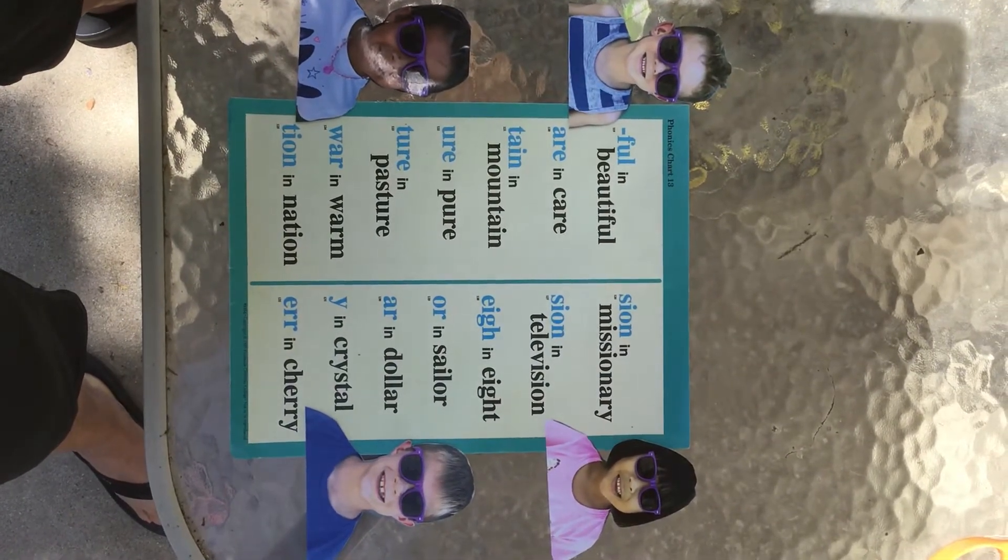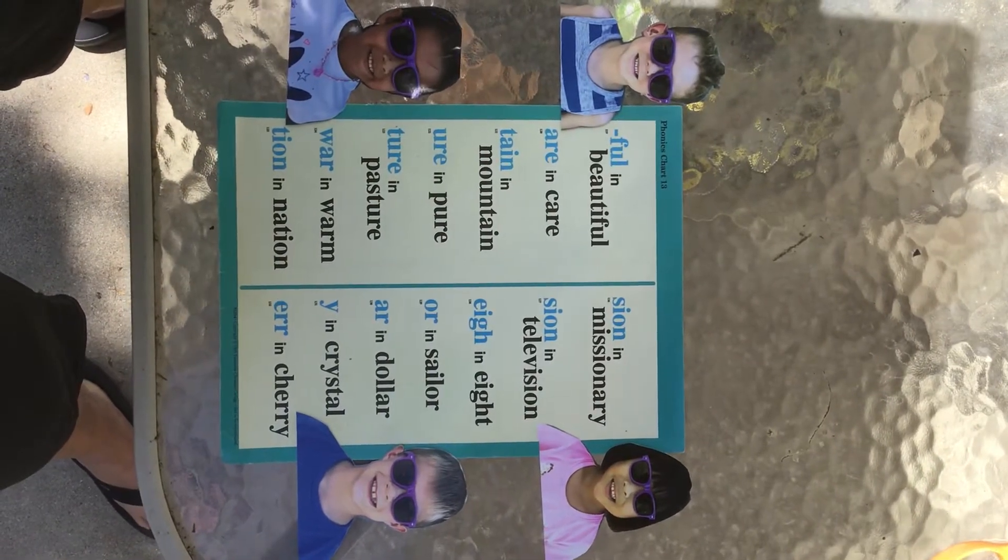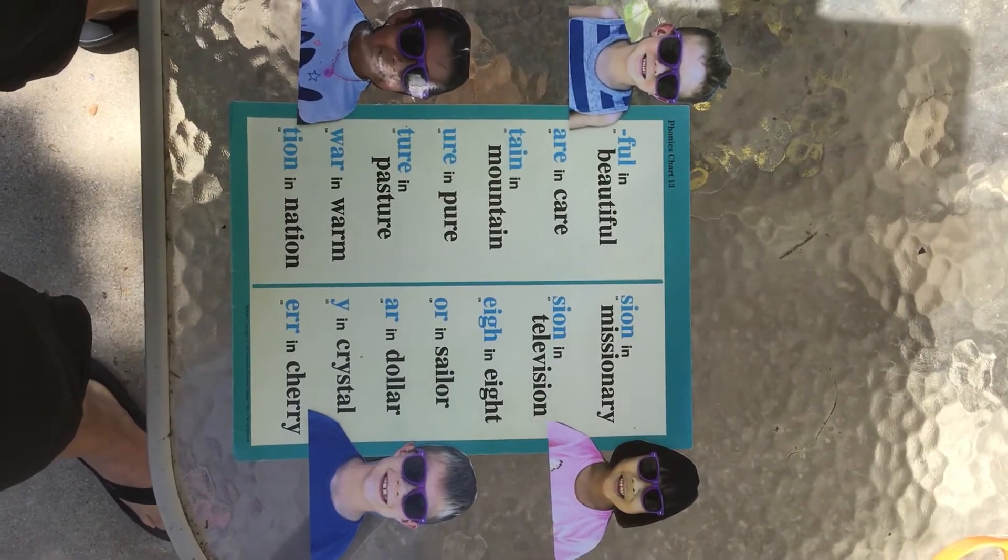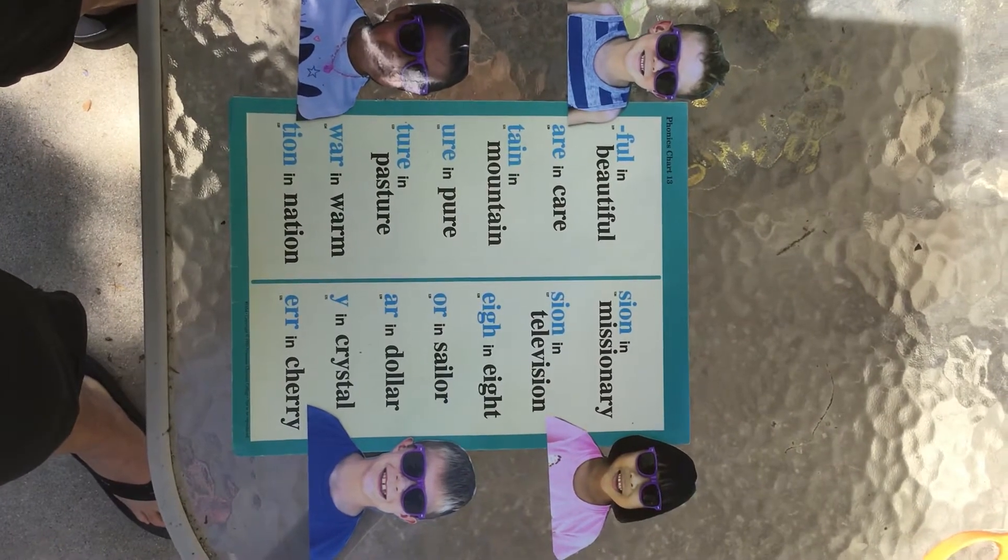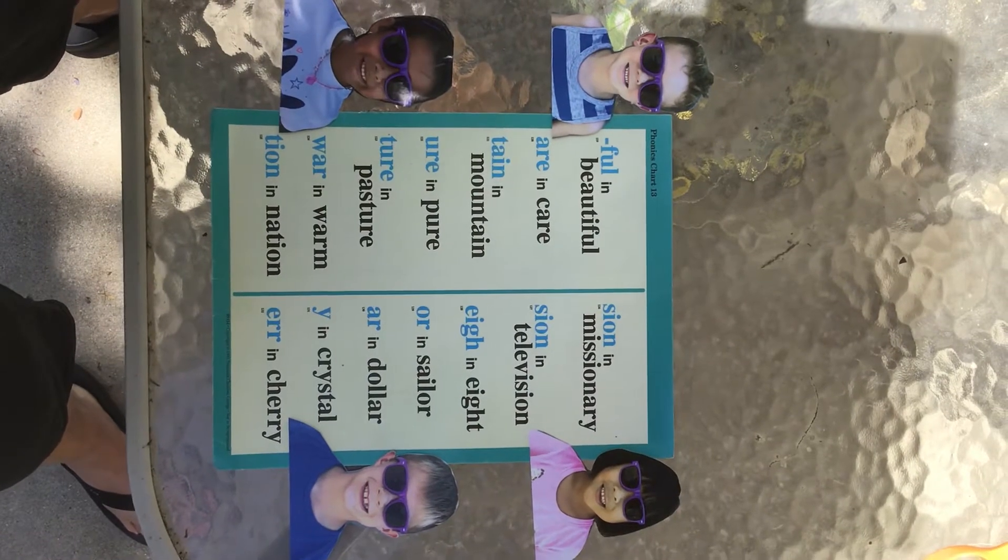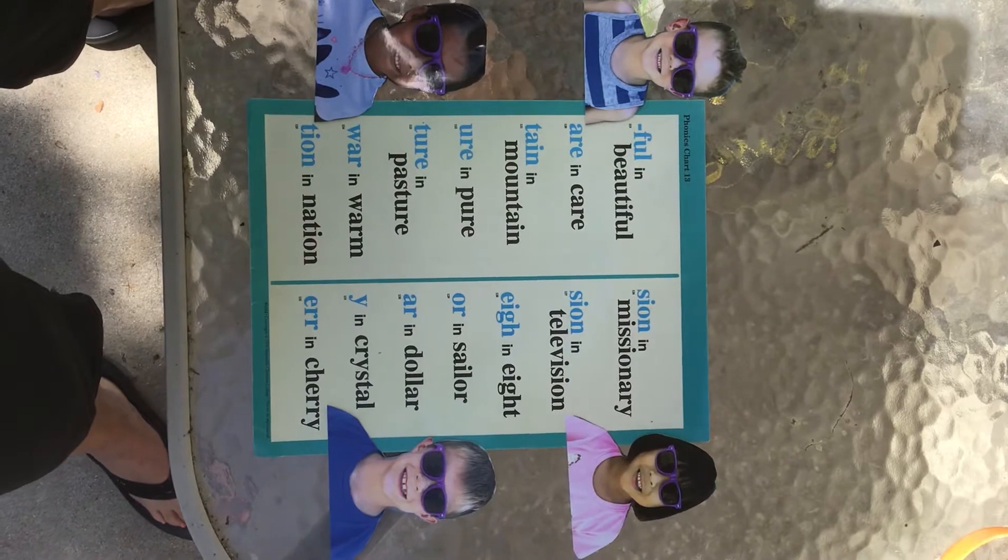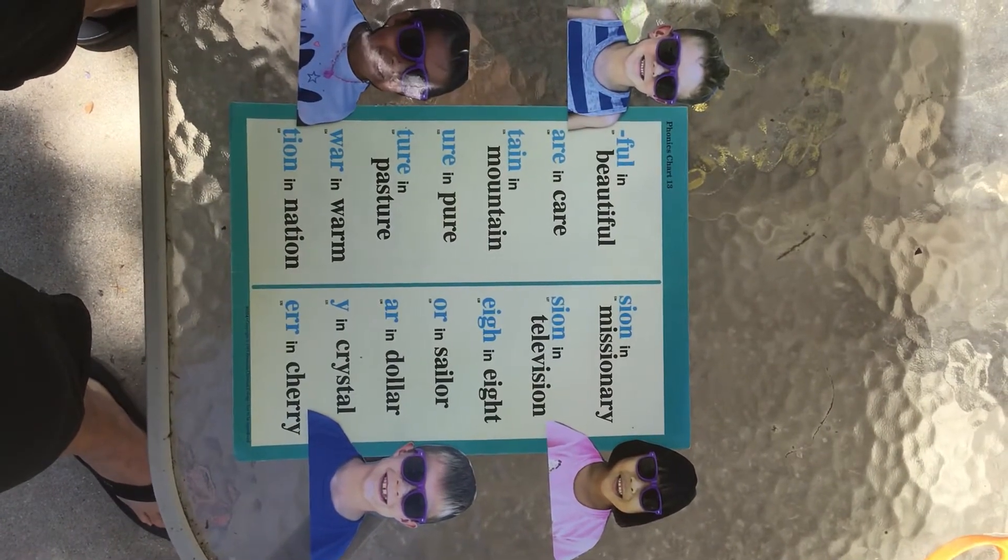F-U-L says full and beautiful. A-R-E says air in care. T-A-I-N says ten in mountain.